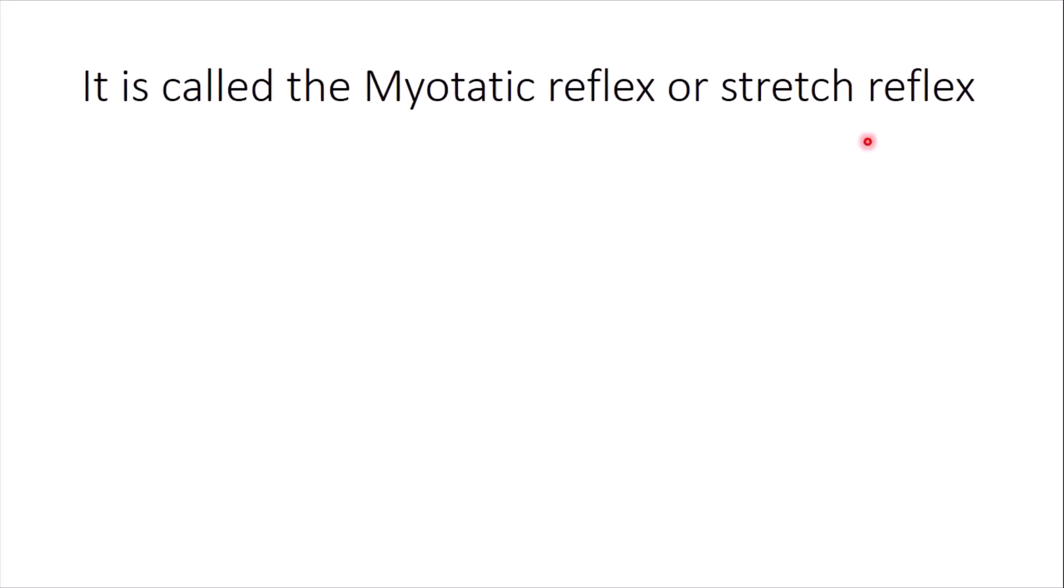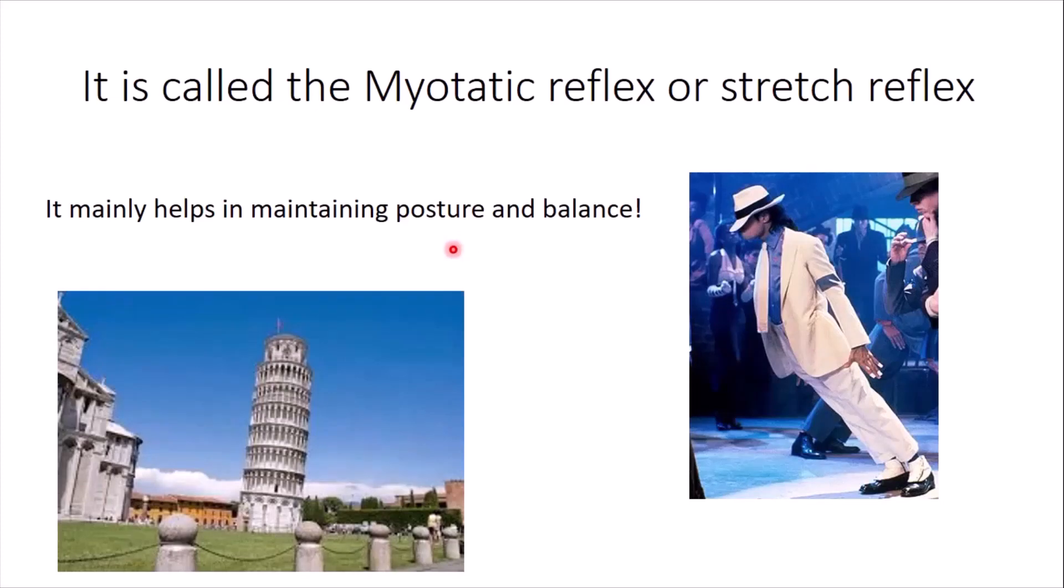So when the muscle is stretched, it responds by contracting. It mainly helps in maintaining posture and balance. When you're leaning to one side or the other or forward or backwards, this reflex helps to maintain your body in a straight position, keeps you balanced. Michael Jackson and the Leaning Pizza Tower make a very good demonstration here. But I think I'll demonstrate it myself.